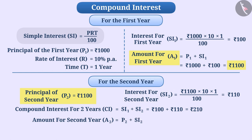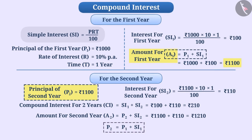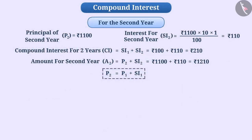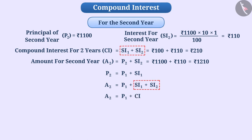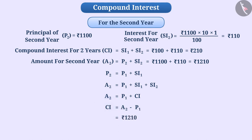After two years, the amount A2 equals principal of the second year P2 plus interest of the second year SI2, that is rupees 1100 plus rupees 110, equals rupees 1210. We can write P2 as P1 plus SI1, so A2 equals P1 plus SI1 plus SI2, which can also be written as A2 equals P1 plus CI. Subtracting the principal from A2 gives compound interest: CI equals rupees 1210 minus rupees 1000, equals rupees 210.